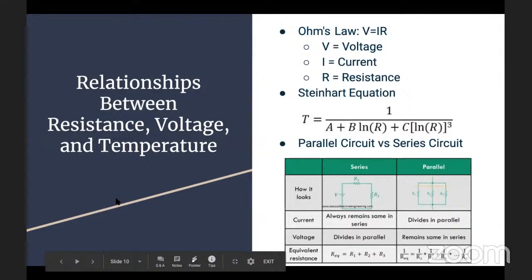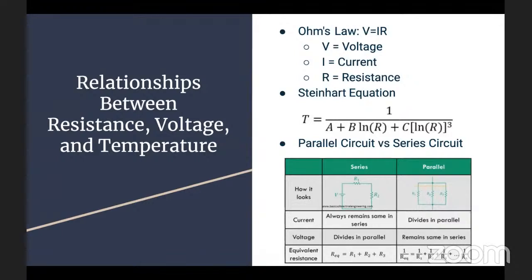One part of the written exam is relationships between resistance, voltage, and temperature. One important part is Ohm's law - if you're in Circuit Lab, this is second nature to you - V equals IR, where V is voltage, I is current, and R is resistance. Another important part to Detector Building is the Steinhart-Hart equation shown on the screen. You'll need to know parallel circuits and series circuits, and there's a comparison on the screen.